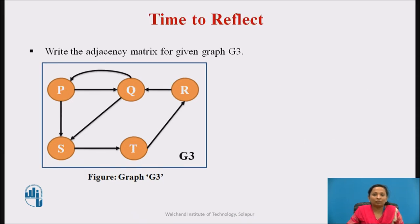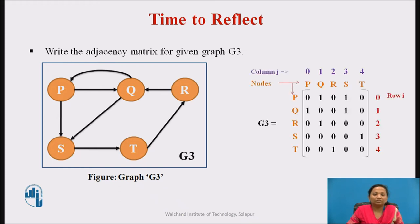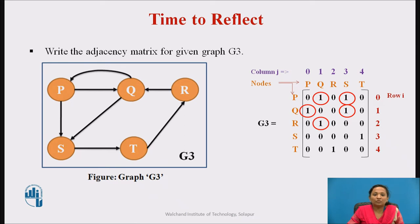Here is the time to reflect on the content we have learnt. Pause the video and write the adjacency matrix for given graph G3. Here is the adjacency matrix for graph G3. There is an edge from vertex p to q and p to s, so the value 1 is used to represent those edges. Similarly, there is an edge from vertex q to p and q to s, and from vertex r to q — value 1 is used. There is an edge from vertex s to t and from vertex t to r, so value 1 is used in the respective cells.